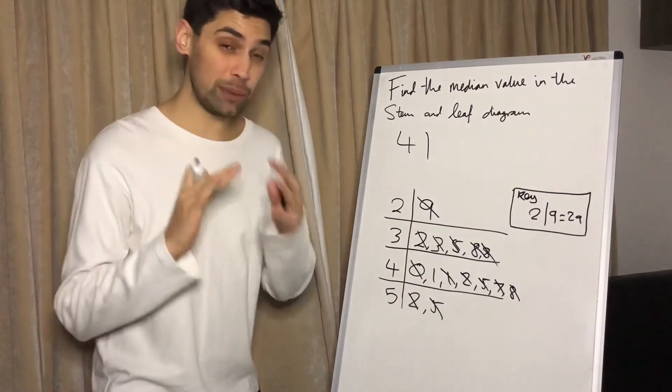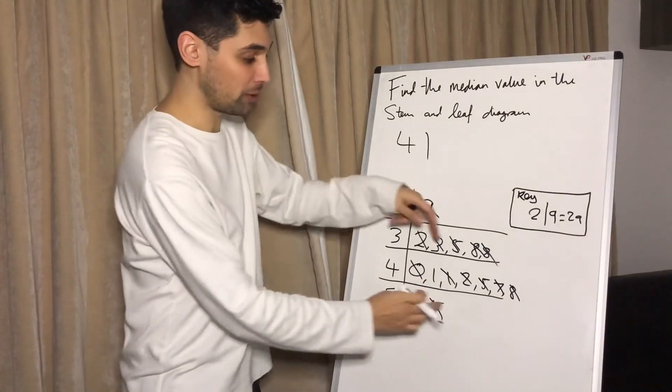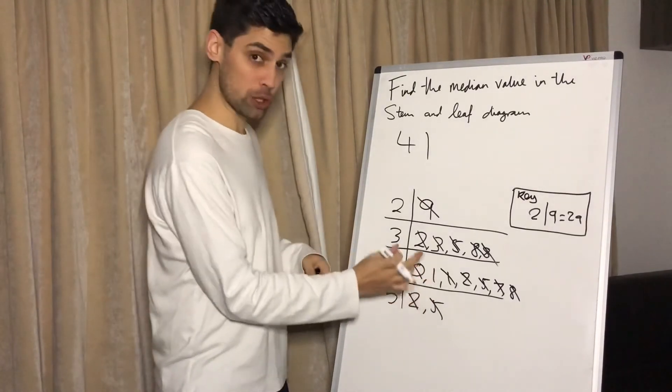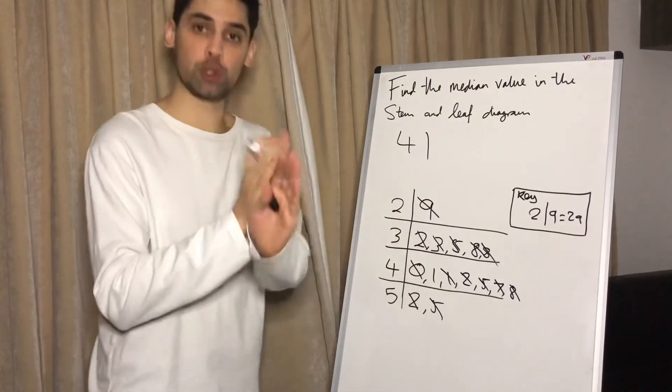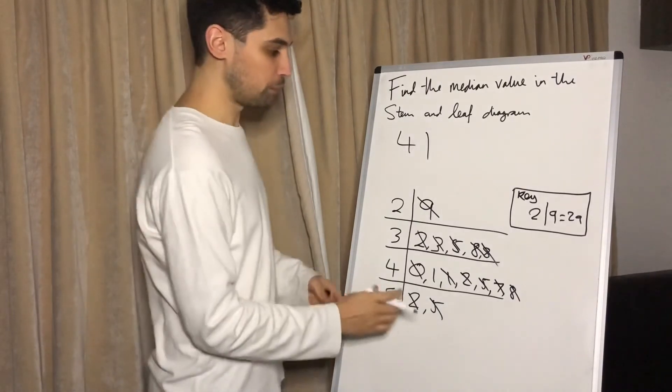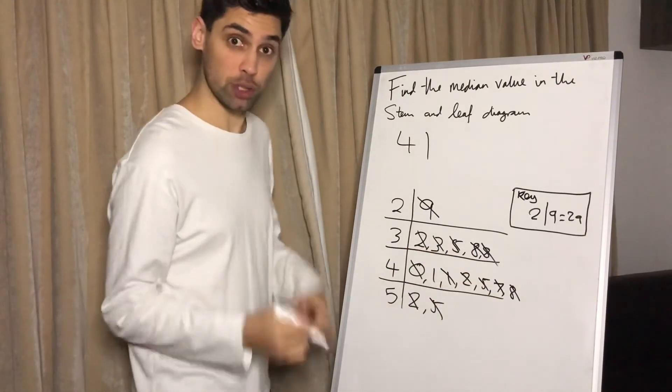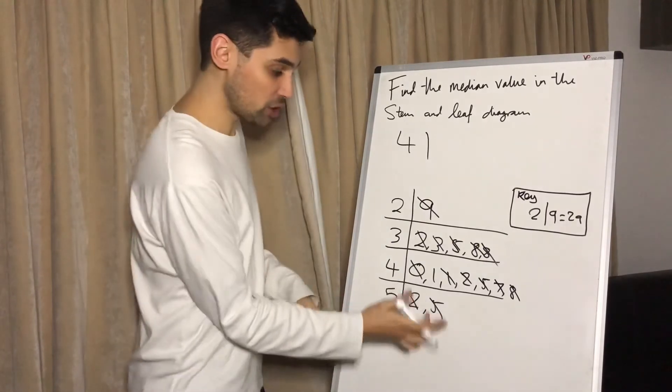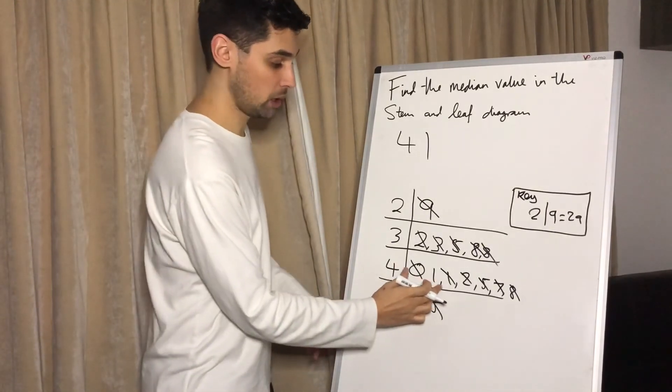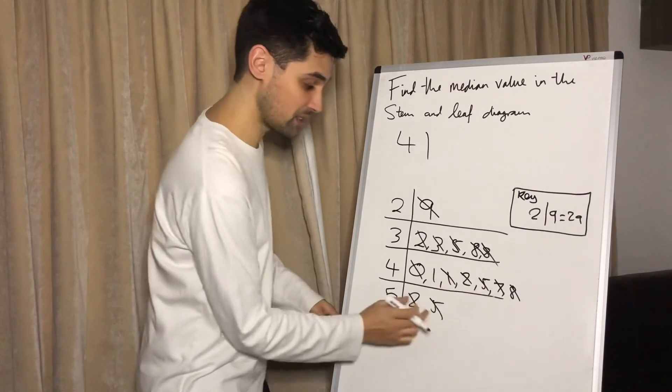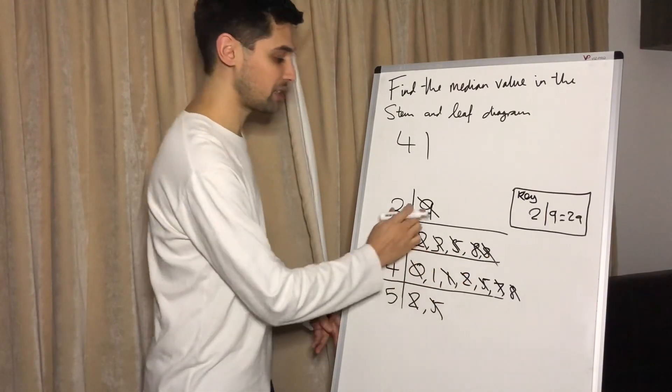So please be really, really careful when you're canceling out numbers from the front and back. Often you might be left with two in the middle, in which case you find the number in between those, which is fine. But just make sure you've got the same number of numbers canceled out either side. So a great way to double check is just to count how many are above and below this number. One, two, three, four, five, six, seven. One, two, three, four, five, six, seven. So we know that number is definitely in the middle.